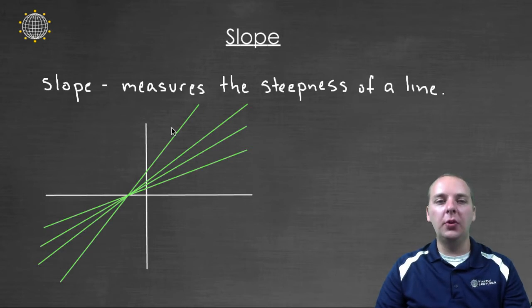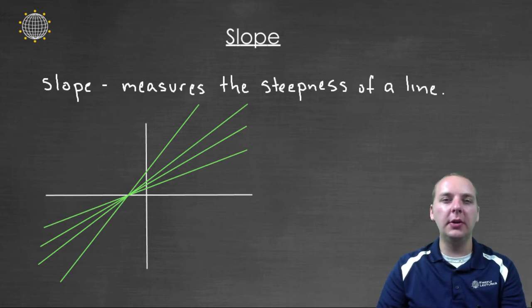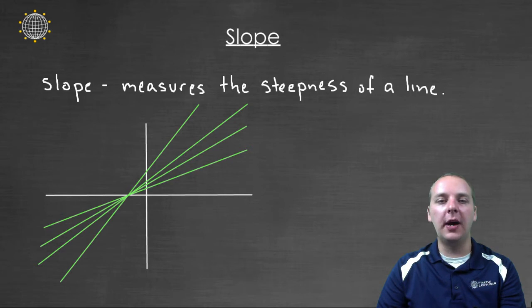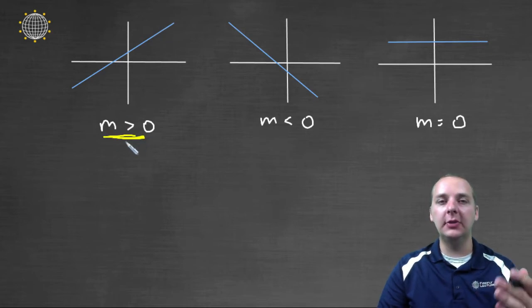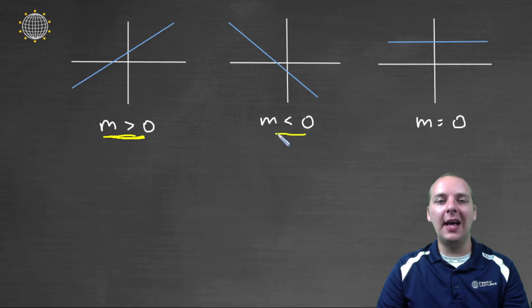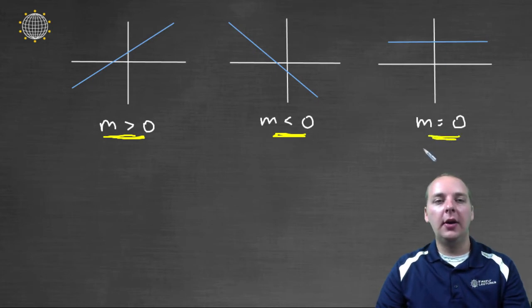We want to associate numerical values to exactly how steep this line is. Now how do we do that? We'll talk about that in just a minute. Let's talk about a few properties we want out of our slope. One thing I want: if a line is tilted upwards, I want that to be indicated by a positive slope. If it's tilted downwards, I want it indicated by a negative slope. And if it's completely flat, I'd like that it would be equal to zero.